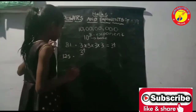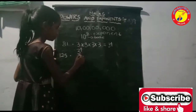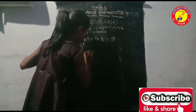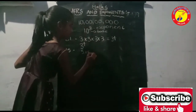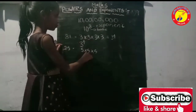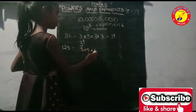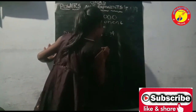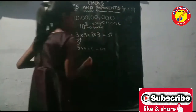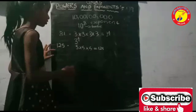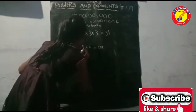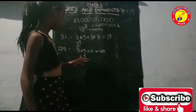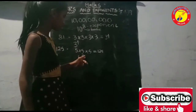How can you write 125 in exponential form? You can write it as 5 into 5 into 5. 5 into 5 is 25, and 25 into 5 is 125. The exponential form of 125 is 5 to the power of 3. Here, 5 is the base and 3 is the exponent.